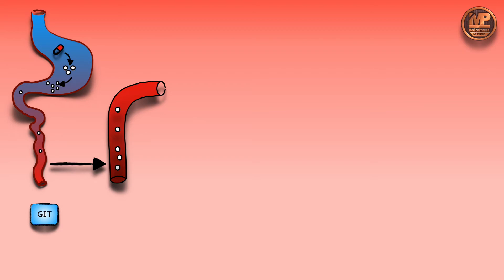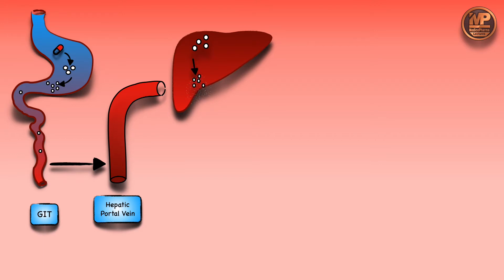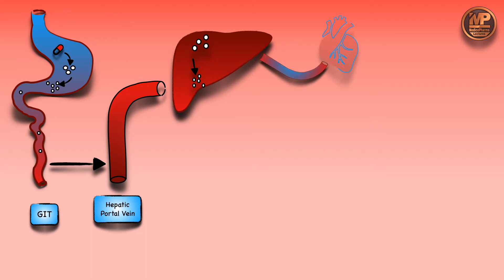The blood vessel carrying drugs from the GIT is the hepatic portal vein, which is unique because it goes to the liver first rather than directly to the heart. When the drug reaches the liver for the first time, a small quantity gets destroyed — this is called first pass metabolism. The remaining drug then moves on to the heart.